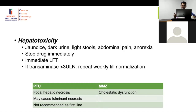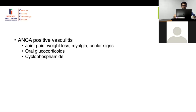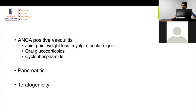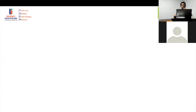PTU causes focal hepatic necrosis and can lead to fulminant necrosis; methimazole usually causes cholestatic dysfunction. PTU is not recommended as first line — only in the first trimester of pregnancy. Another important rare adverse effect is ANCA-positive vasculitis — a rash that does not subside with calamine and antihistamines may be the first sign. This is treated with glucocorticoids or cyclophosphamide. Other rare adverse effects include pancreatitis, autoimmune hypoglycemia, and aplastic anemia.